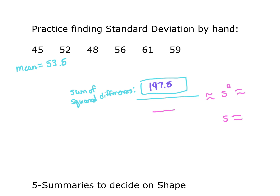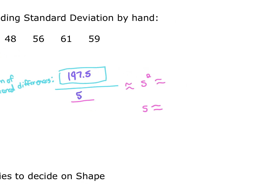We divide by five — remember, that gives us s squared which is our variance. What's that value? 39.5. Then we take the square root of that — what did you get, Jackson? 6.3, or rounded further, 6.28 for the standard deviation. That's the standard deviation.